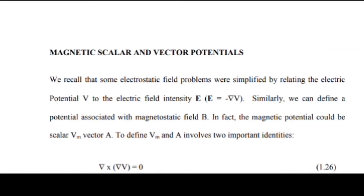In electrostatic fields, we derived the equation E equal to minus del V, where the relationship between E and V is: electric field is the negative gradient of potential. Similarly, we can define a potential associated with the magnetic field. The magnetic potential could be scalar, represented as Vm, or vector magnetic potential, represented as A.